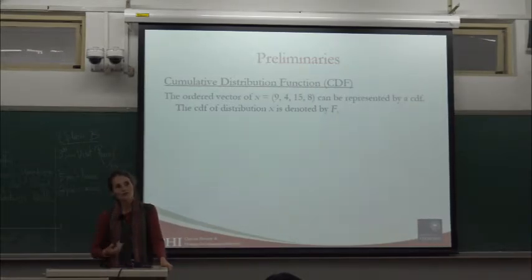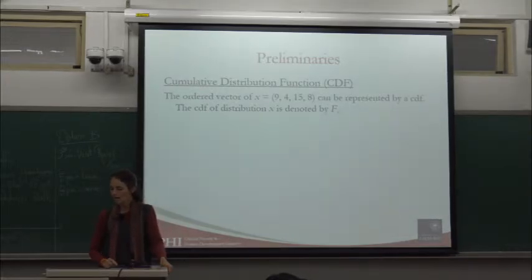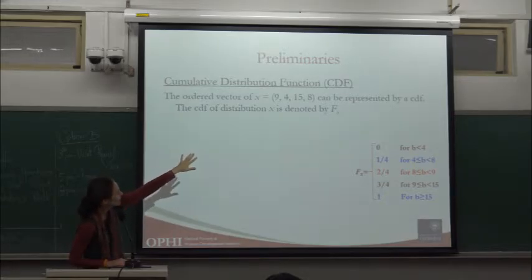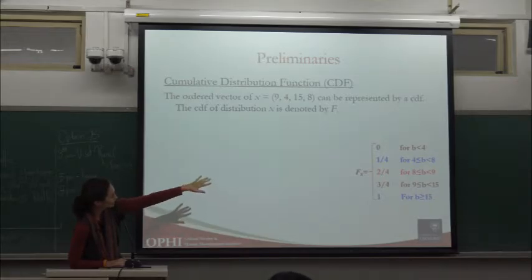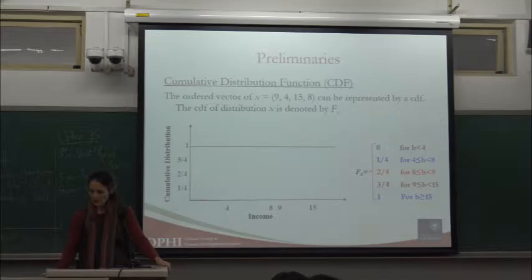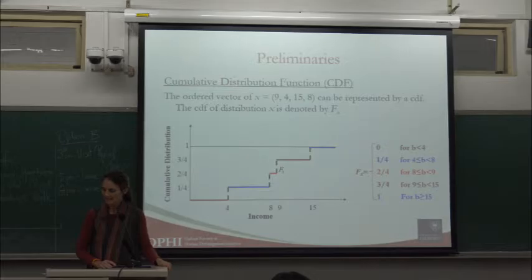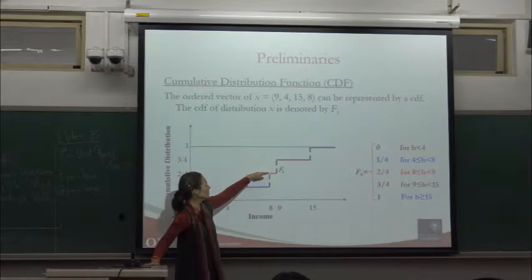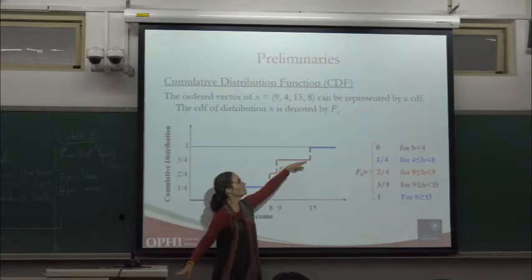If ordered, we often display the information on the distribution using a cumulative distribution function, denoted f(x), which will take different values for different people and their income vectors. So the first person has 4, then 8, 9, and 15 — one person each at those income levels.